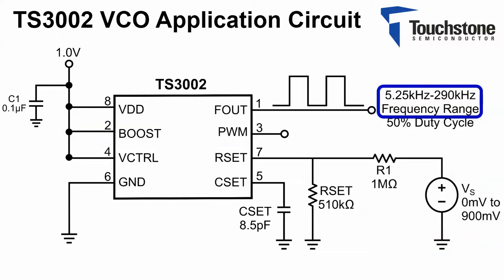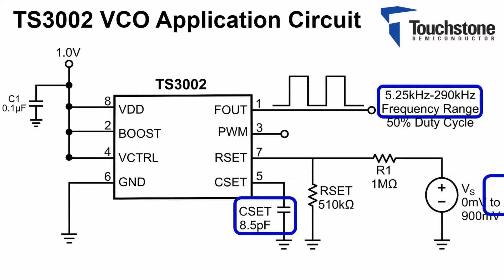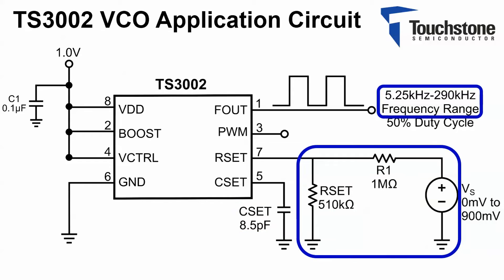As stated in the datasheet, the fundamental Fout frequency is determined by the CSET value as well as the RSET value. Before I discuss the necessary values for these components, let's take a look at how this voltage divider affects the output frequency.